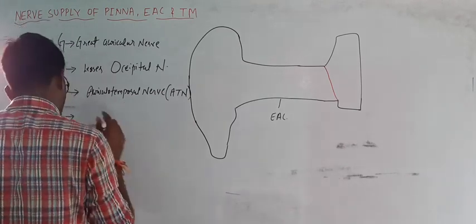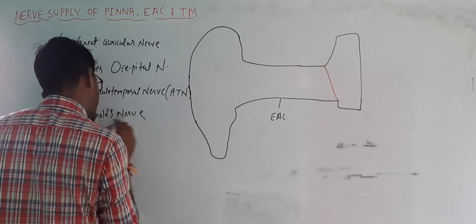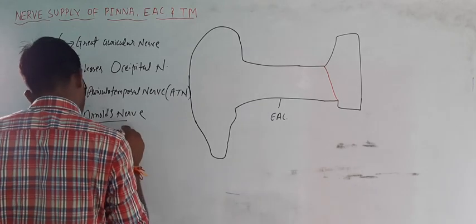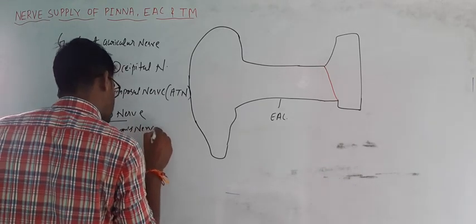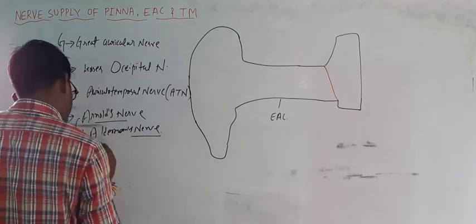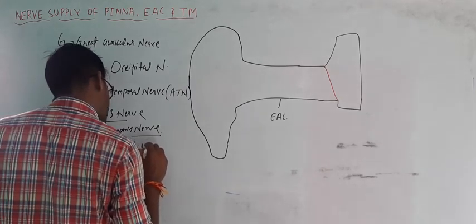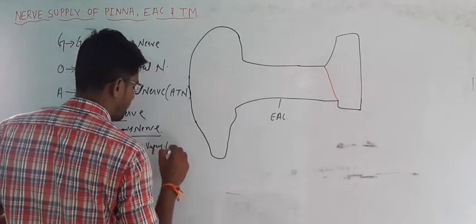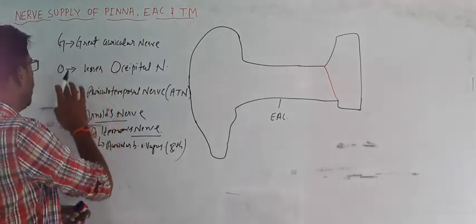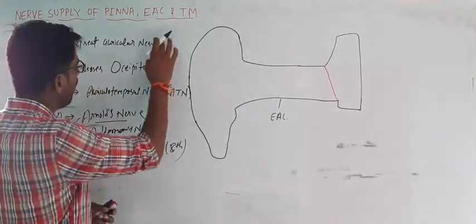The second A is Arnold's nerve — or as you will see it in the books, it's given as the auricular branch of the vagus, which is also called Arnold's nerve or Alderman's nerve. So this is GOA: Greater Auricular nerve, Lesser Occipital nerve, Auriculotemporal nerve, and Arnold's nerve. All these supply the pinna.